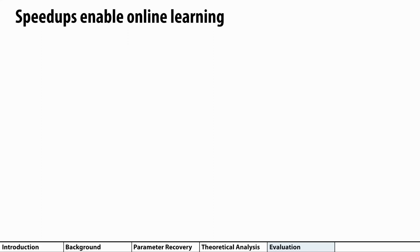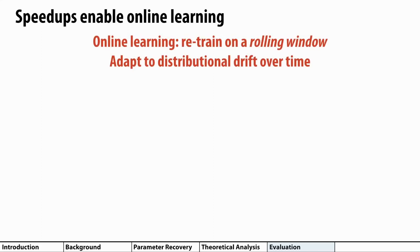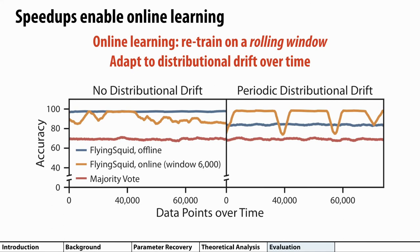One of the potential applications that we're excited about here is the ability to adapt to distributional drift over time with online learning. As a quick proof of concept, we ran some simple experiments with training FlyingSquid on a rolling window of points in the online setting, only looking at the recent points to do parameter recovery instead of using all the points. Here's a synthetic example showing a situation where this can be useful in adapting to distributional drift. You can check out our paper for more details, as well as some additional theoretical results about this use case.